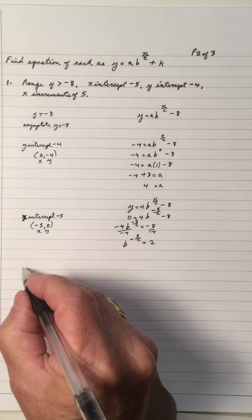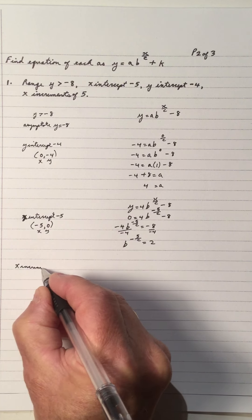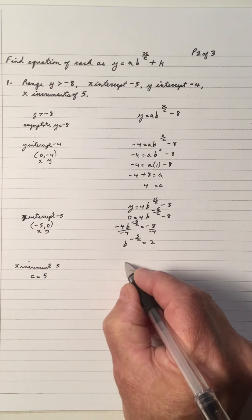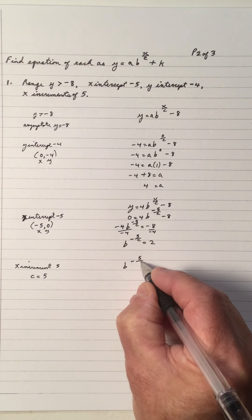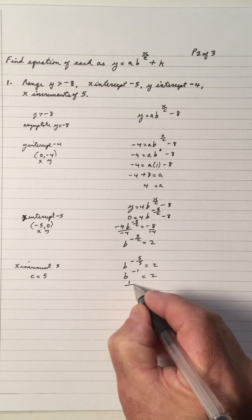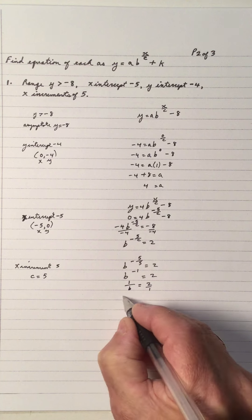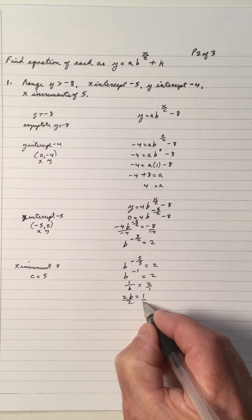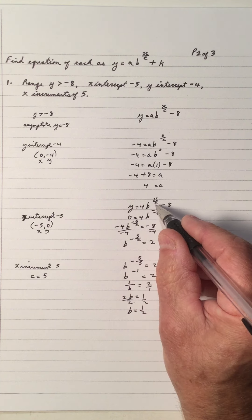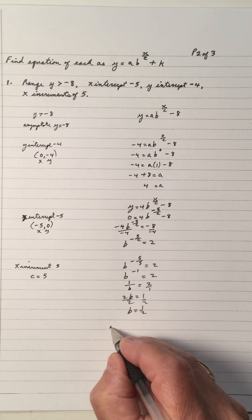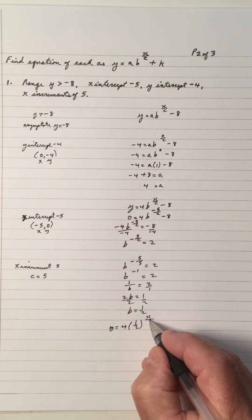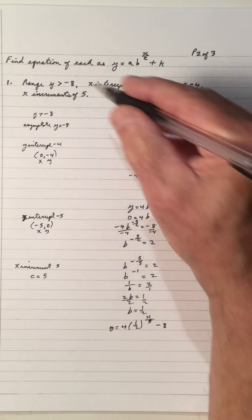Now we look at the x-increments, which are five, so c is five. Substituting into the equation, we get b to the negative five over five, which is b to the negative one, equals two. Since b to the negative one is one over b, we have one over b equals two over one. Cross-multiplying gives 2b equals one, so b equals one half. The equation is y equals four times one half to the x over five, minus eight.